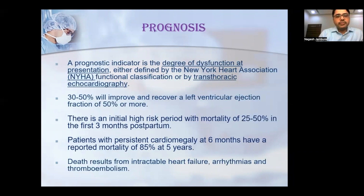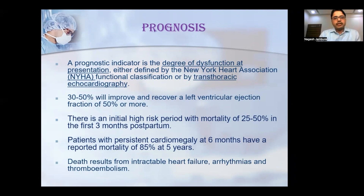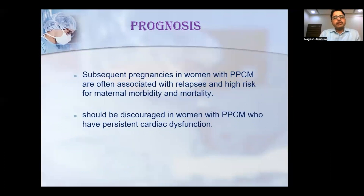Prognosis depends upon the degree of dysfunction at presentation, defined by NYHA classification and transthoracic echocardiography. 30 to 50% of patients will improve, with initial mortality risk of 25 to 50% in the first three months postpartum. Patients with persistent cardiomyopathy at six months have reported mortality of around 85% at five years. Death is due to intractable heart failure, arrhythmia, or embolism. Subsequent pregnancy is associated with relapse and high maternal mortality, so pregnancy should be discouraged in women with persistent cardiac dysfunction.